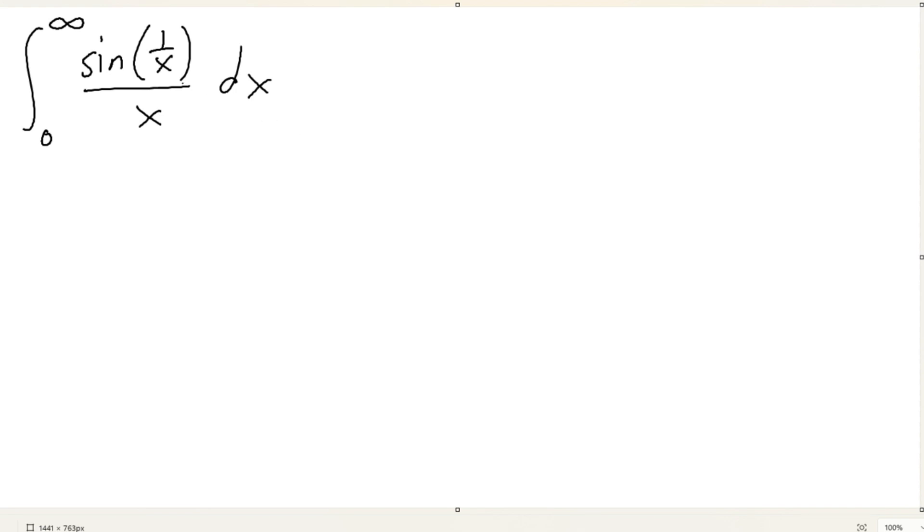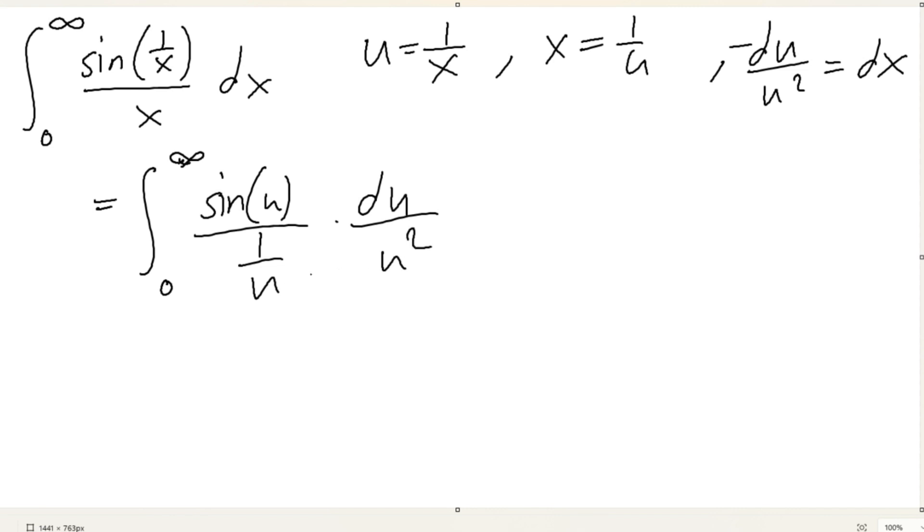Okay, this almost looks like a Dirichlet integral. However, we have a 1 over x. So what do we do with that 1 over x? Well, if you just test it out, let u equal 1 over x. Then x equals 1 over u. Du over u squared negative is going to be equal to dx. And this negative is just going to flip the bounds. So this is just pi over 2 as well.